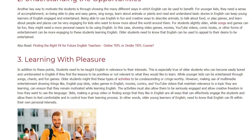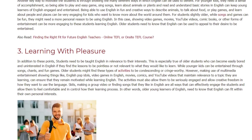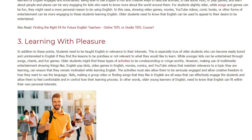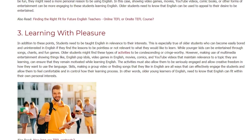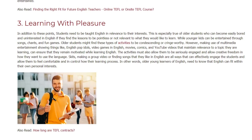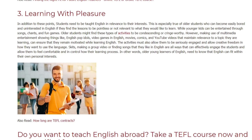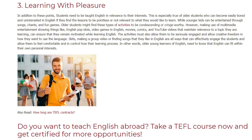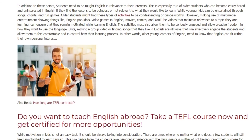While younger kids can be entertained through songs, chants, and fun games, older students might find these types of activities condescending or cringe-worthy. However, making use of multimedia entertainment — such as English pop idols, video games in English, movies, comics, and YouTube videos relevant to the topic being learned — can ensure they remain motivated. The activities must also allow creative freedom, such as skits, making a group video, or finding songs they like in English. These allow students to feel comfortable and in control of their learning process. In other words, older young learners need to know that English can fit within their own personal interests.